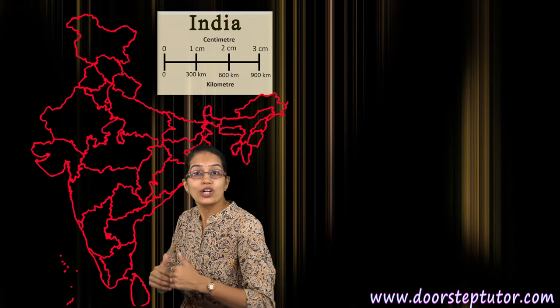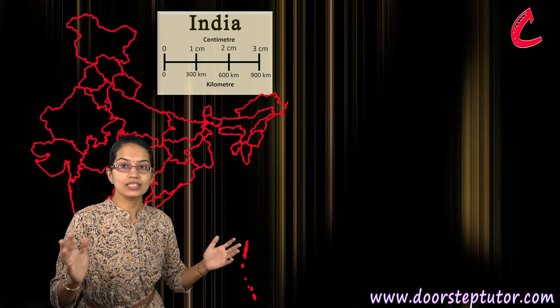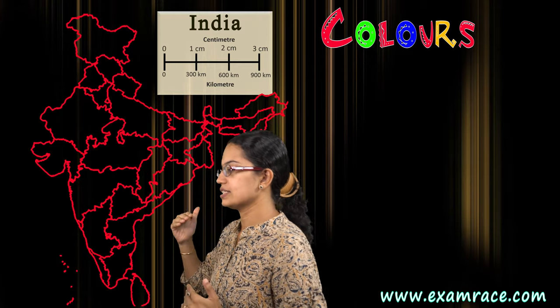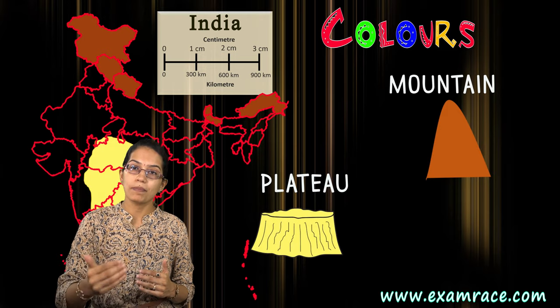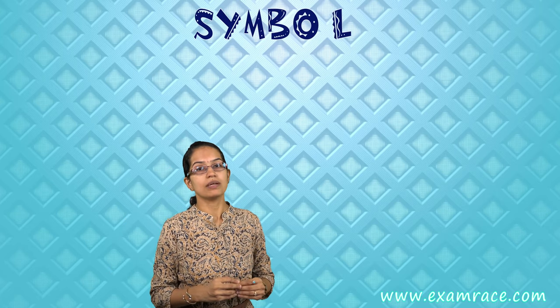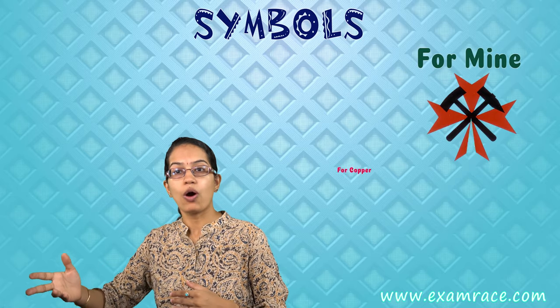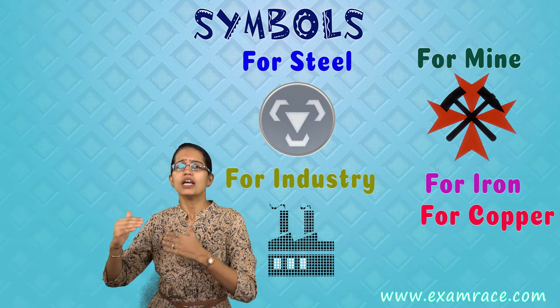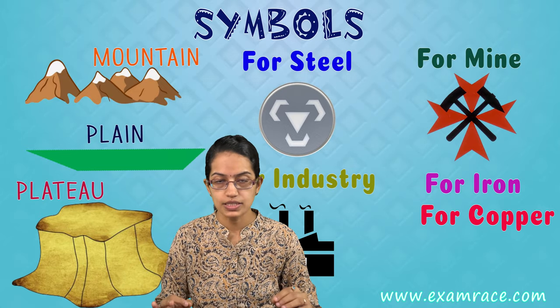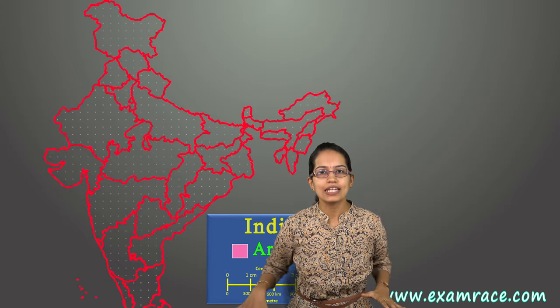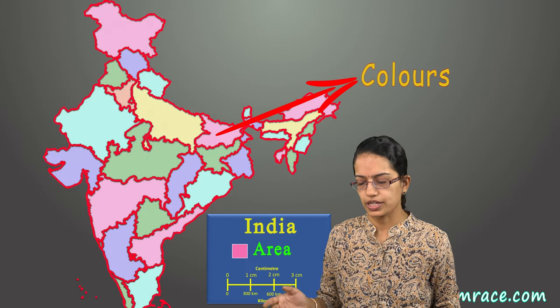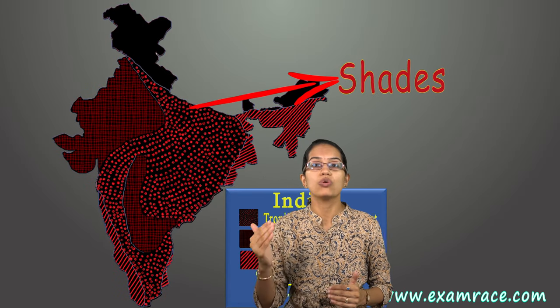Besides the scale, what are other interesting things in the map? There are numerous colors which signify whether it's a mountain, a plateau, or a plain. There are also symbols — some symbols are for mines, for copper, steel, iron, industries. For a point location, we use a symbol. If it is an area location, we use colors to denote it and usually do a shading. Those are all different types of content in a map.